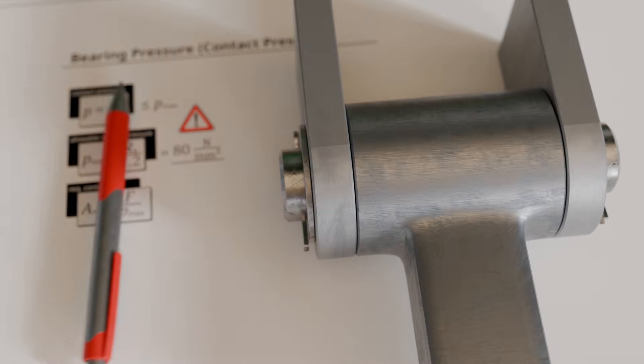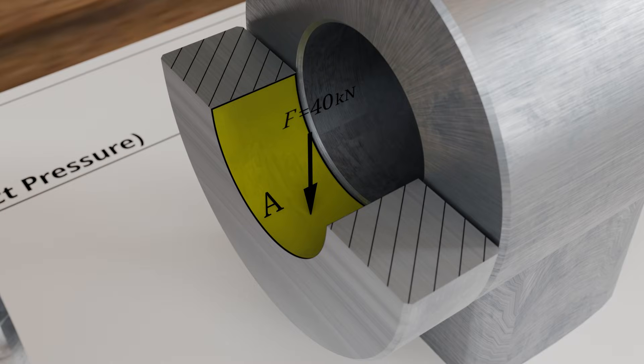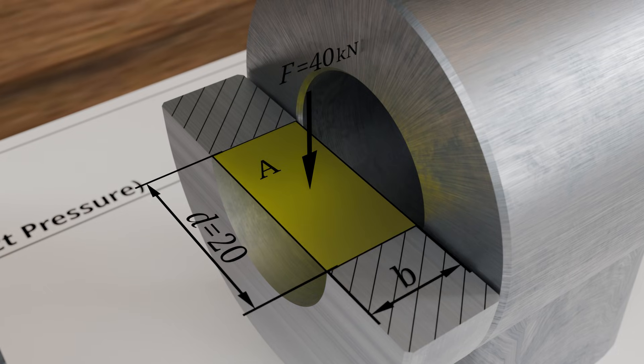This force is distributed over the yellow highlighted bearing surface in the clevis. With the bearing pressure determined using the projected rectangular area, this area is the product of the pin diameter D and the clevis width B.